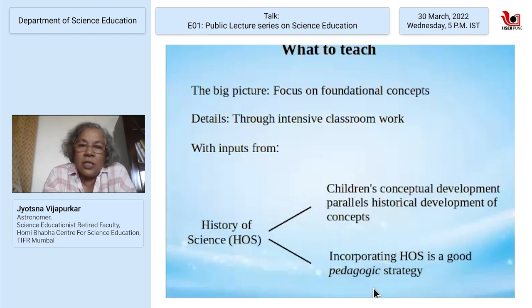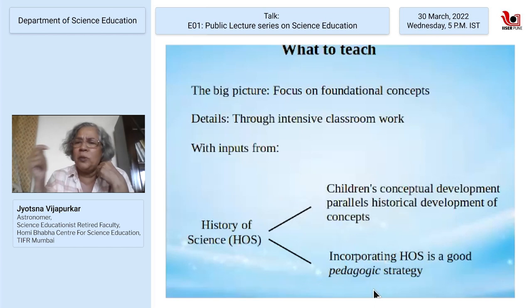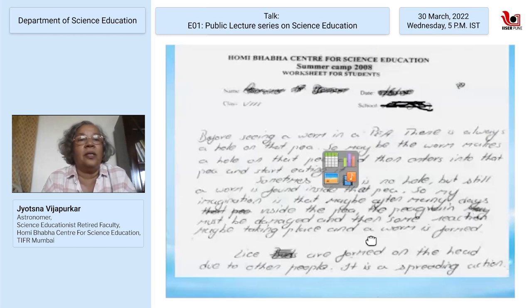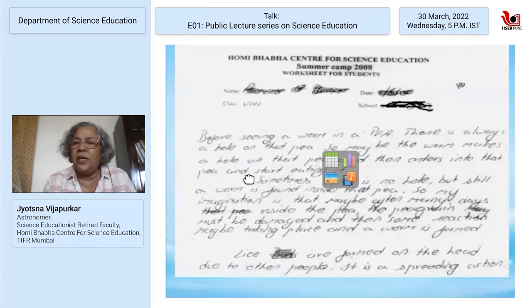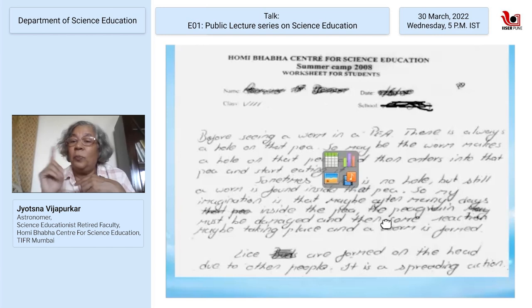Using history of science is also a good pedagogic strategy. We give children the output of years, decades, or centuries of research in science and they feel responsible for not getting it — it's their fault. But if you tell them that really brilliant minds in history actually grappled with the same problems they have, psychologically it is extremely satisfying. A child told us: before seeing a worm in a pea, there is always a hole in the pea, so maybe the worm made a hole and entered. But sometimes there is a worm even when you don't see a hole, so maybe a chemical process inside produced the worm — which is exactly the thinking around pre-Pasteur ideas.